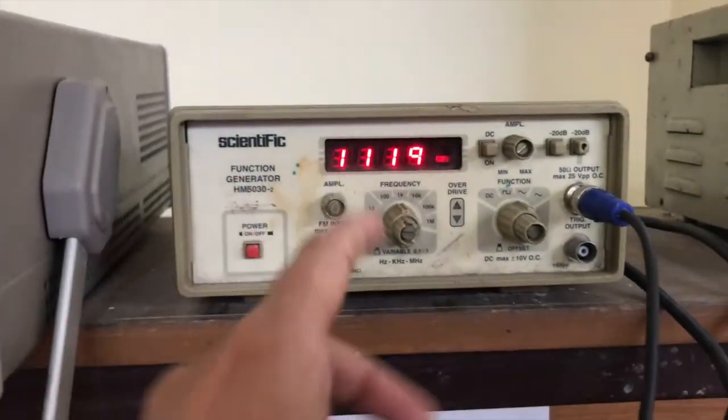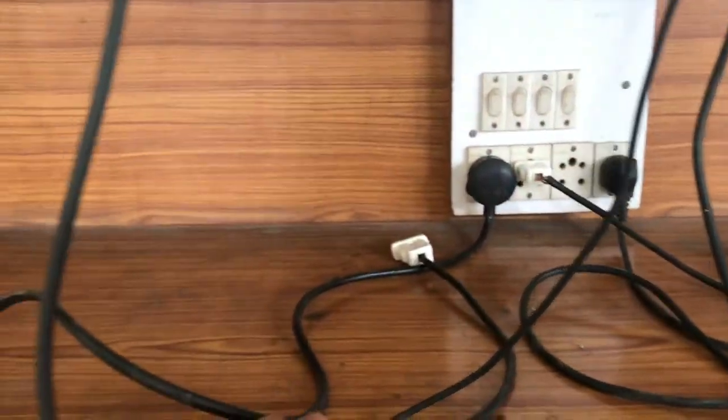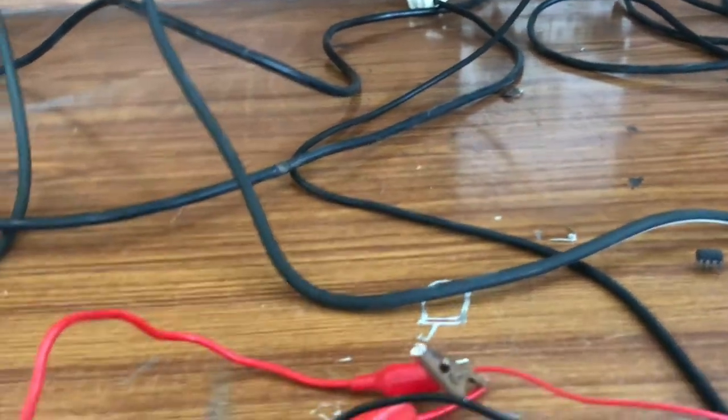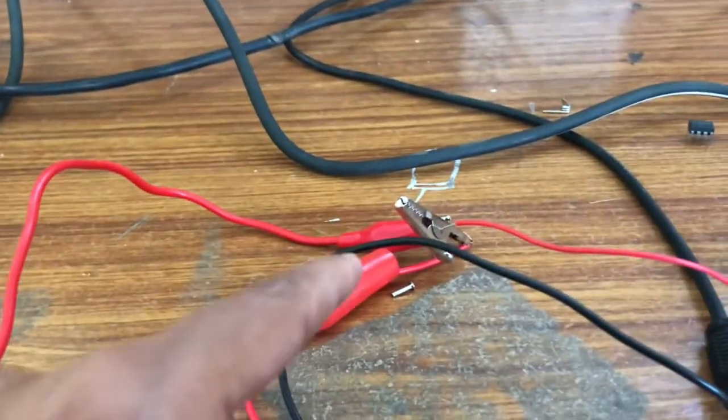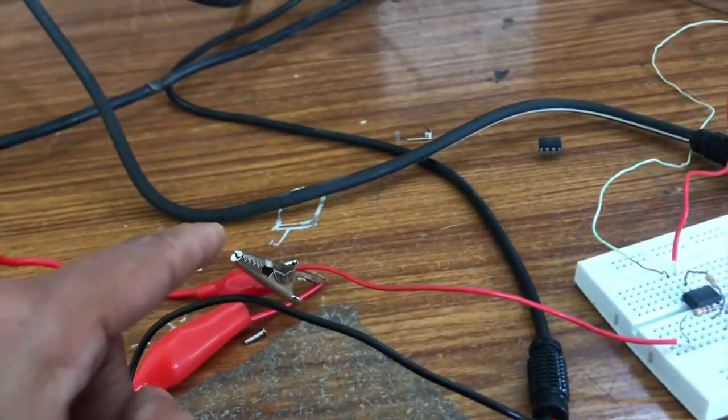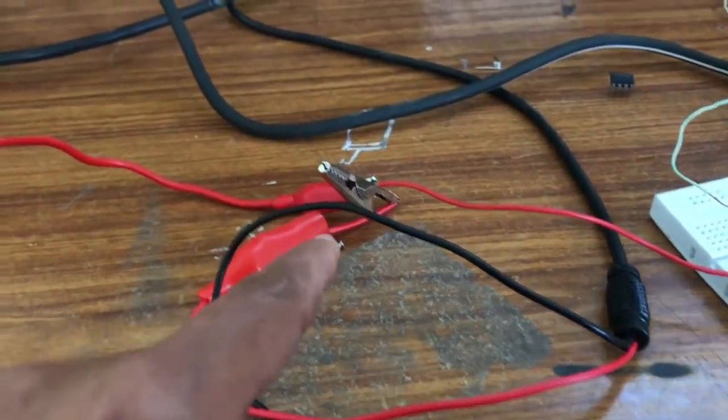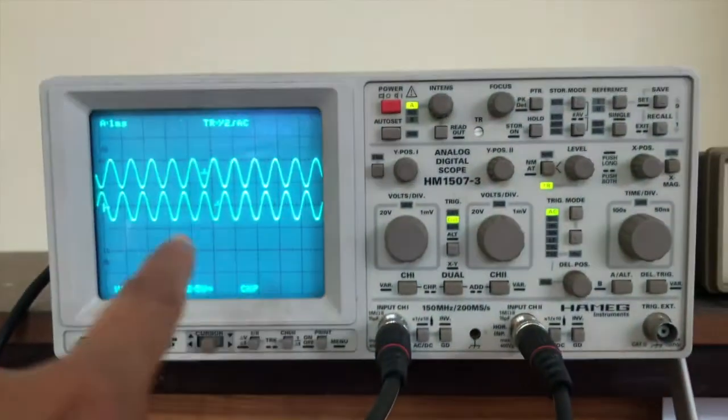Now the input will be applied through this function generator, output of the function generator. Here it is coming and it is connected here and it has two ends. So one end is connected to the ground black one and the red one is given to the op amp.